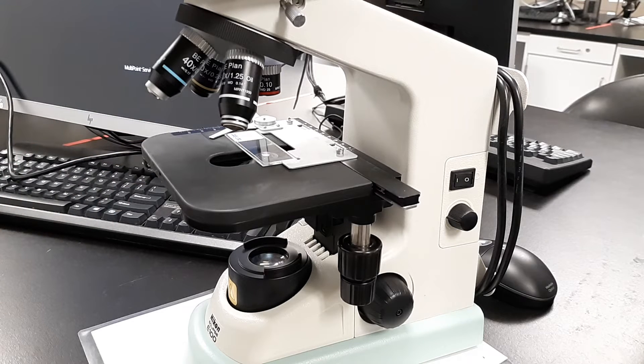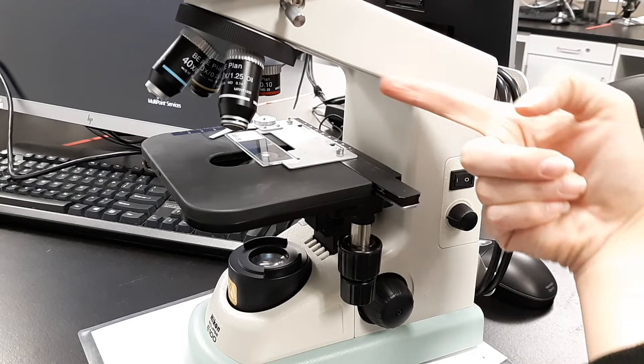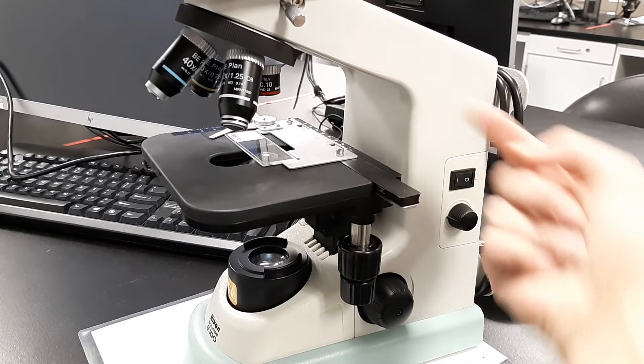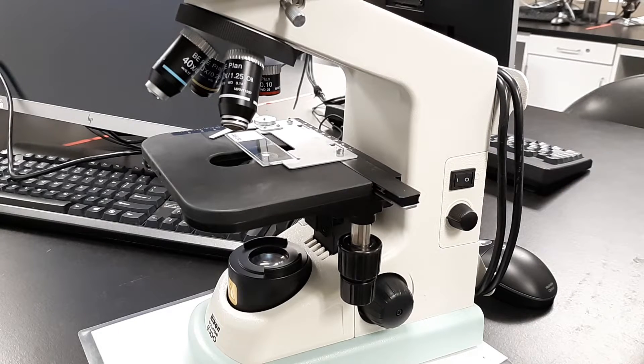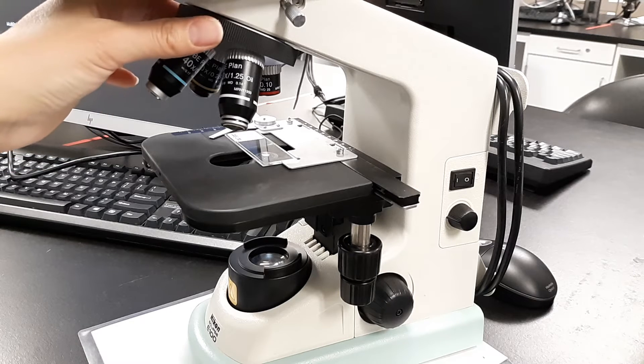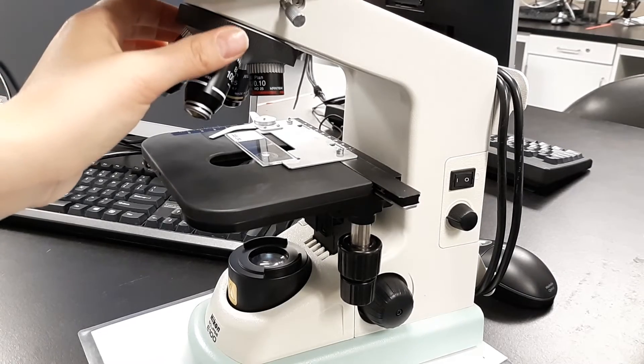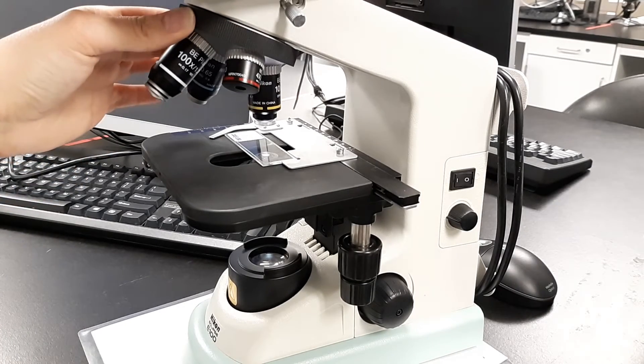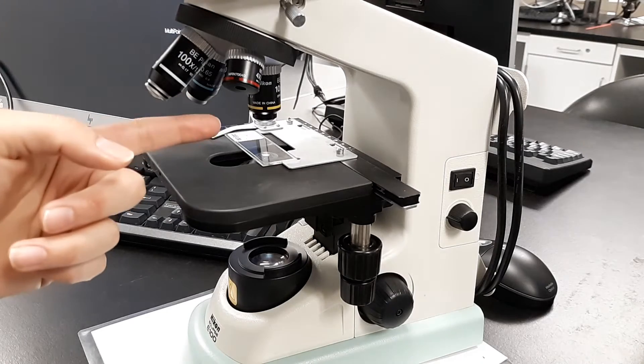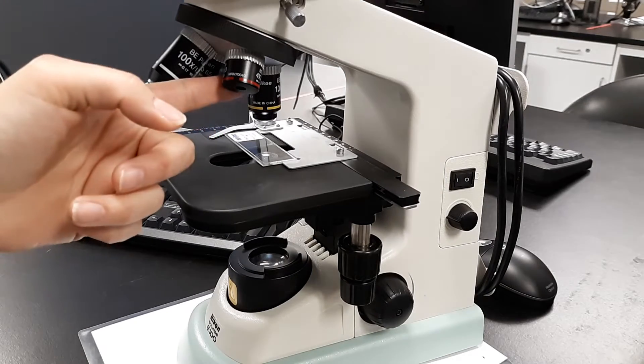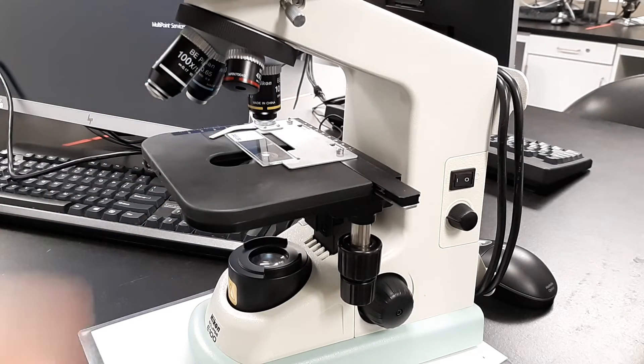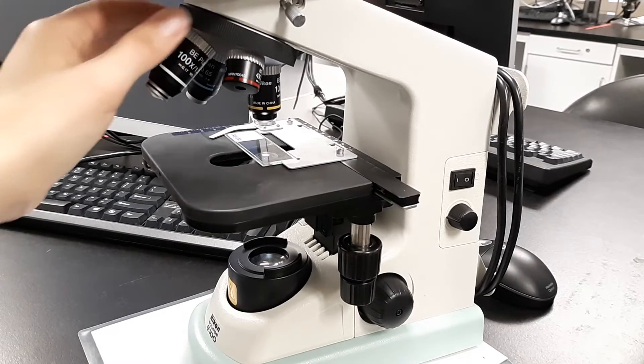Always start on the red objective right there. The red objective is 4x, but the total magnification with the oculars is another 10x, so 10 times 4 equals 40. The yellow objective—when you hear that click, you know you've gone to the next objective—is 10x times the ocular of 10, for a total 100x magnification.